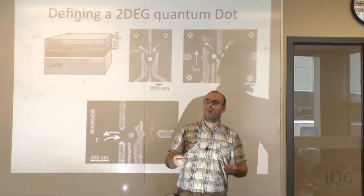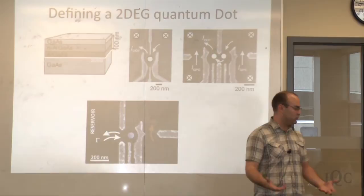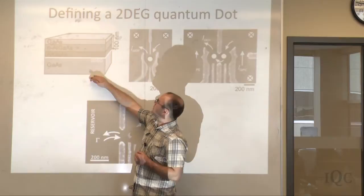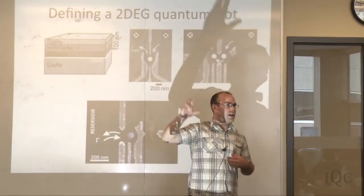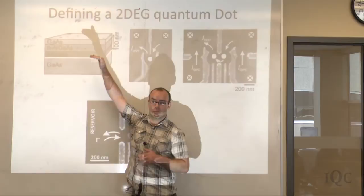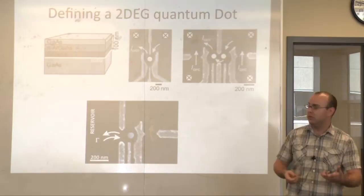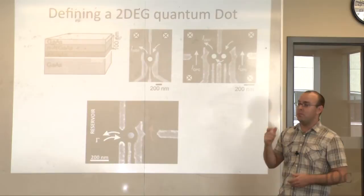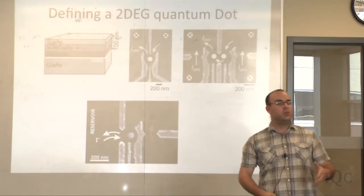Surface theory is a huge field of research — what's going on at the surface of things when you go from one material to the next. People have been using molecular beam epitaxy to grow heterostructures: they grow gallium arsenide with a certain crystalline structure very purely, then start growing aluminum gallium arsenide in it at a certain concentration.